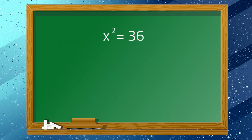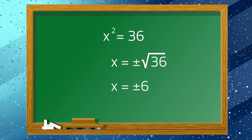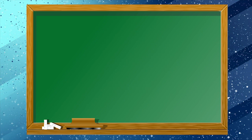Let's have some examples. Take a look at this. We can simply take the square root of 36. Don't forget to use both positive and negative square roots. The correct answer will be positive or negative 6. Remember, practice makes perfect. Now let's try some more.